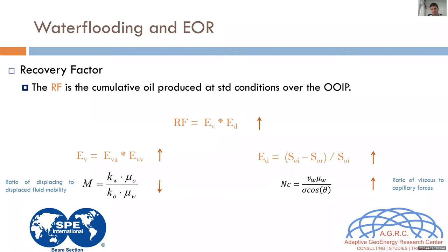The mobility ratio is the relationship between the mobility of the displacing fluid and the displaced fluid — essentially relative permeability over viscosity for each phase. What we want is to decrease the mobility ratio to improve sweeping, getting a more homogeneous sweeping front and a greater sweep efficiency, meaning the injected fluid will contact and sweep a greater fraction of the area.